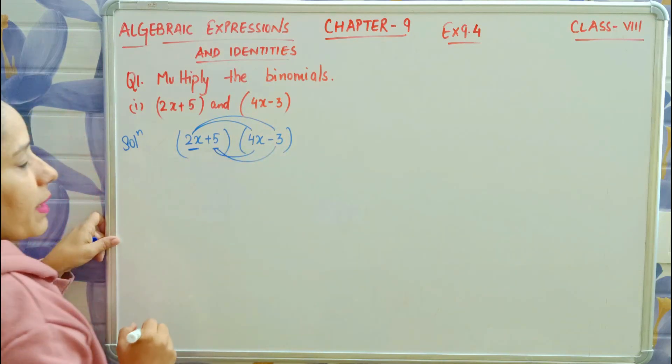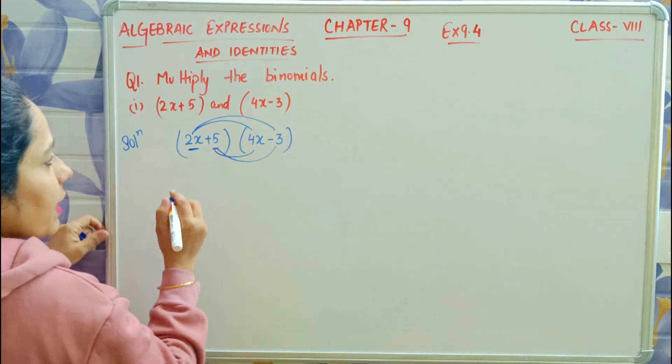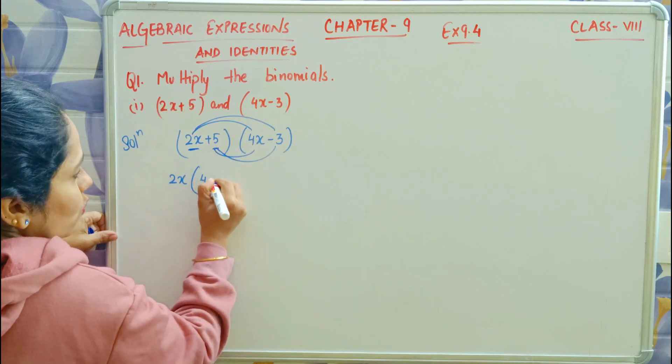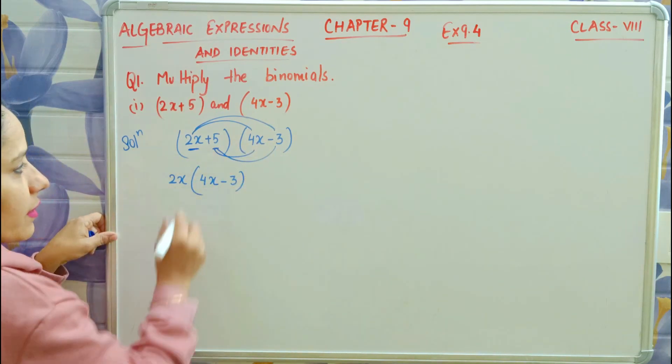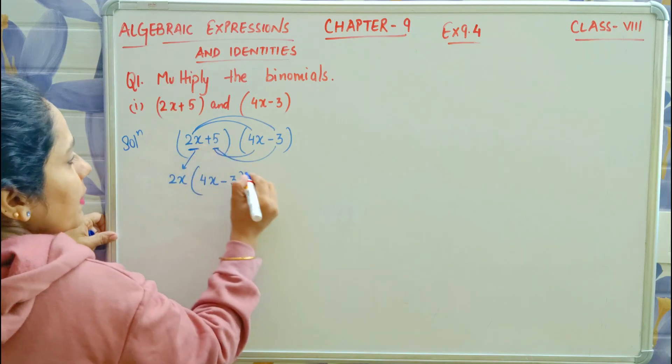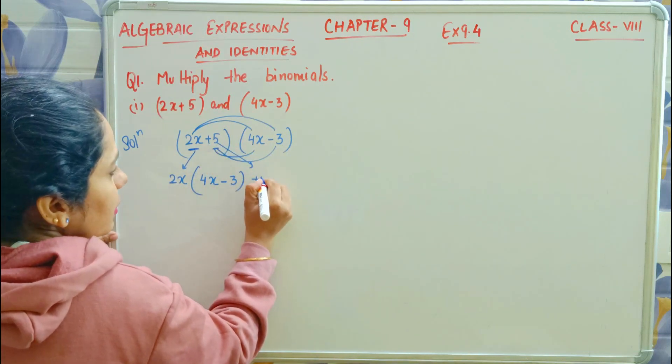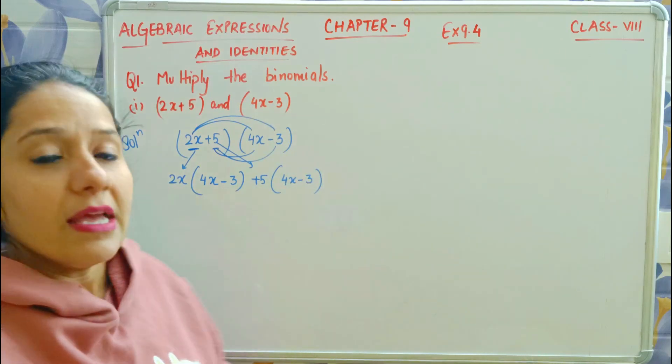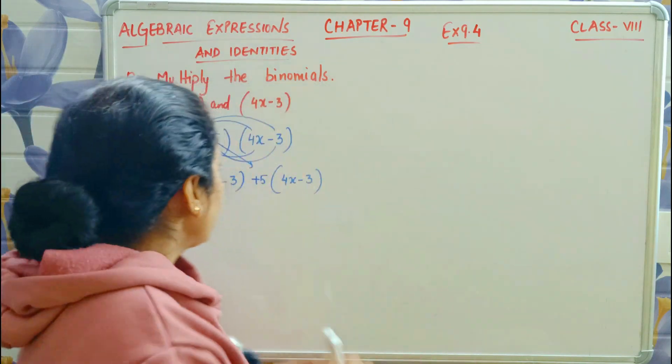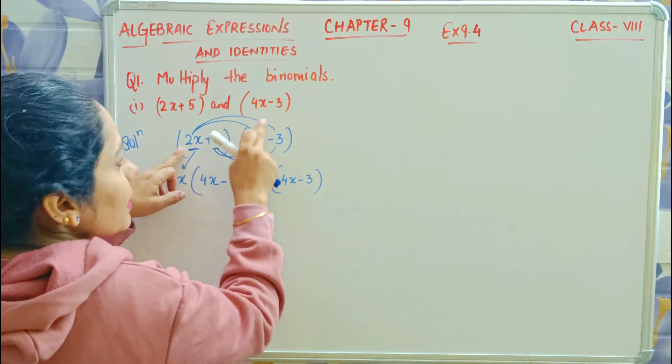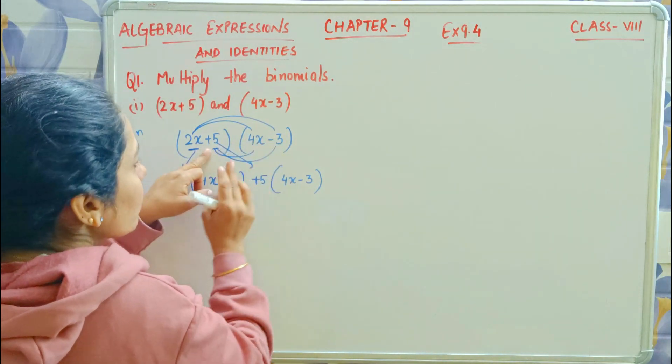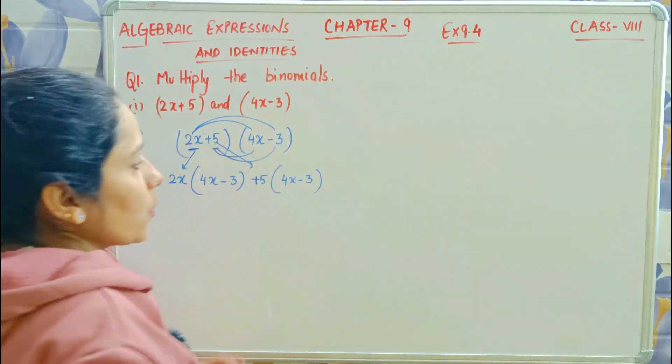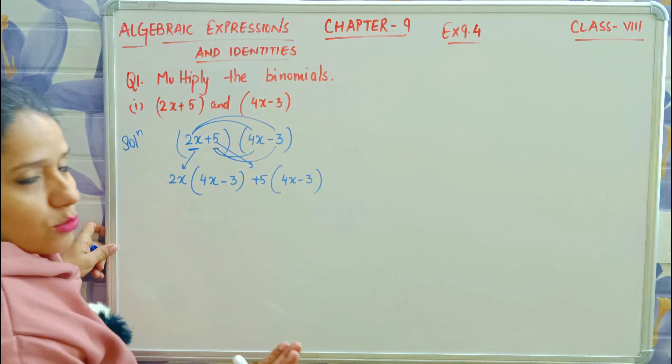We will multiply each term. 2x se humein dono ko multiply karna hai. Then plus 5, and 4x plus minus 3. So first I have to remove this whole bracket and then this whole bracket. This will be easy to multiply.